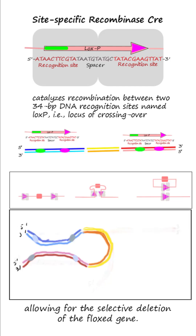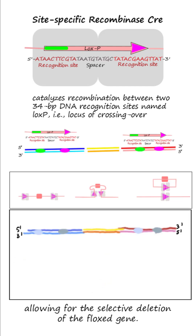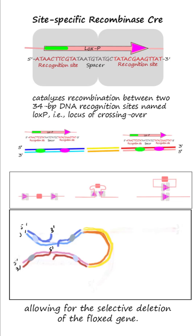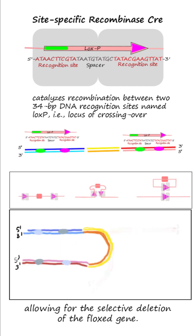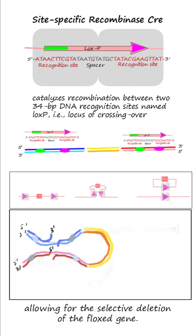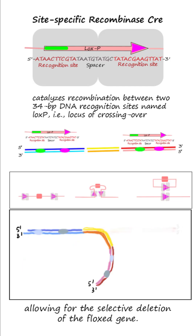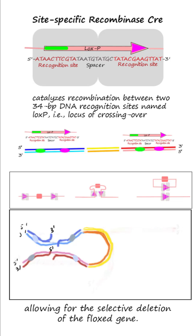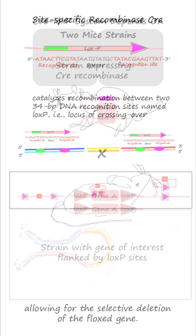The Cre-loxP system uses the site-specific recombinase Cre, which catalyzes recombination between two 34-base-pair DNA recognition sites named loxP — that is, locus of crossing over — allowing for the selective deletion of the floxed gene.